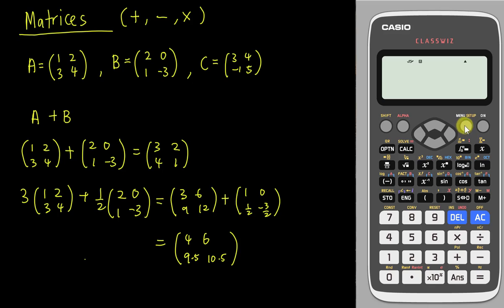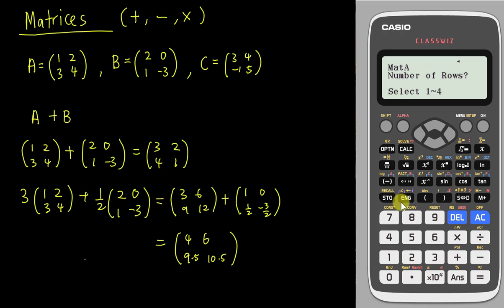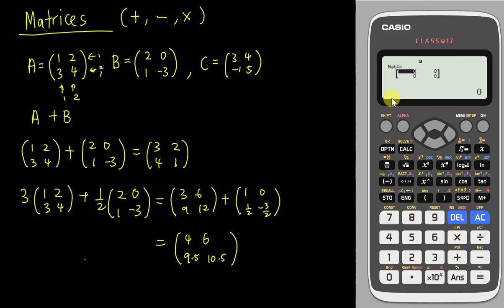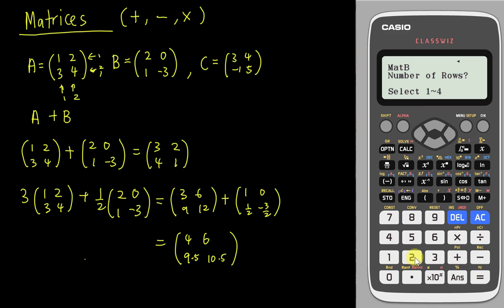If you have the calculator, you can use it to check your answer. Go into the menu and look for matrices. Then define matrix A — you need to know the rows and columns. Rows are read horizontally, columns vertically. For this 2×2 matrix, enter 2 rows and 2 columns. Insert the values for A: 1, 2, 3, 4. Then go to option and define matrix B, also 2×2, with values 2, 0, 1, negative 3.